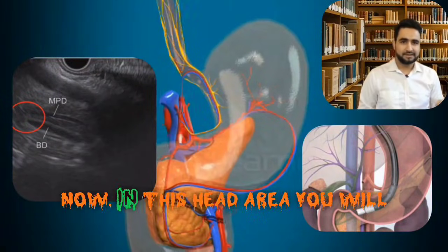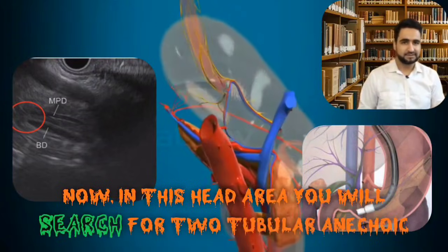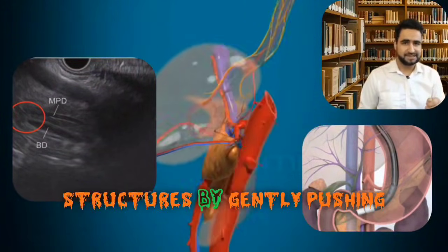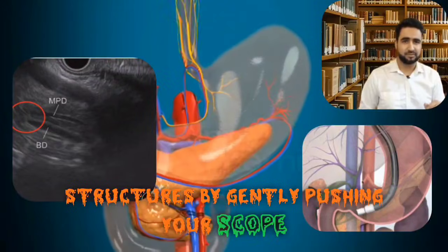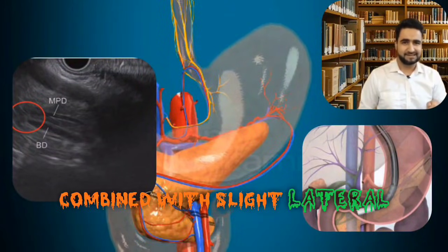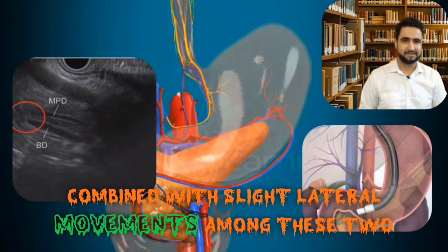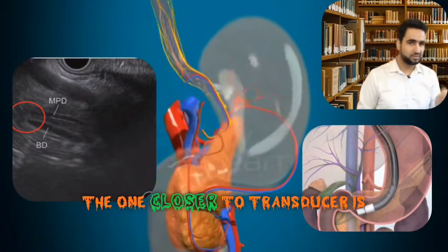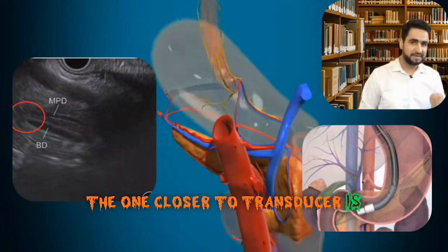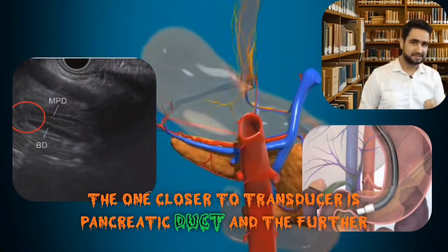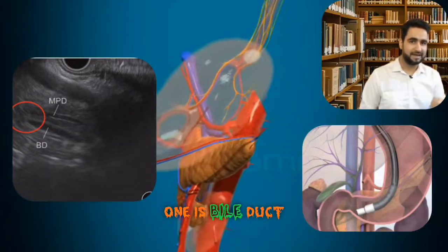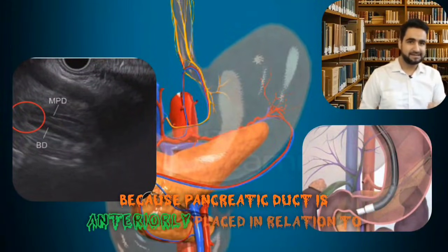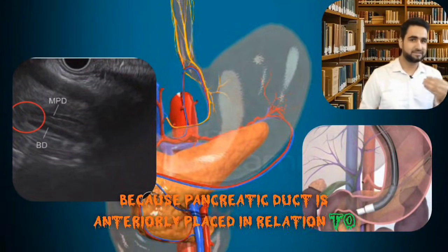In the head area, search for two tubular echogenic structures by gently pushing your scope combined with slight lateral movements. Among these two tubular structures, the one closer to the transducer is the pancreatic duct and the further one is the bile duct, because the pancreatic duct is anteriorly placed in relation to the bile duct.